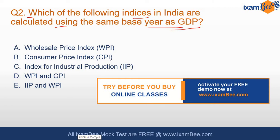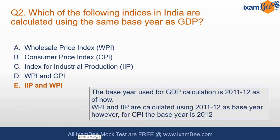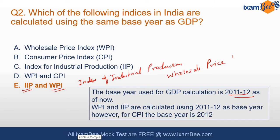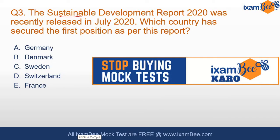The base year for India's GDP is 2011-12. IIP (Index of Industrial Production) and WPI (Wholesale Price Index) also use the same base year of 2011-12. You also have to know the base year for CPI, which is 2012, and where these indices are used — for example, RBI uses CPI for inflation targeting.